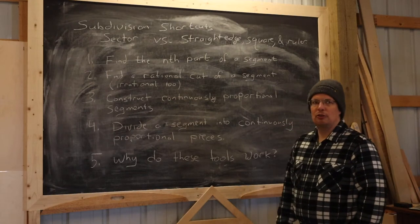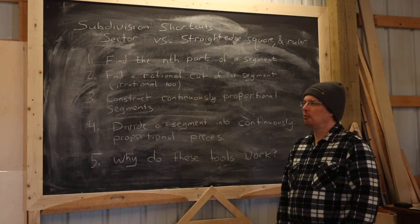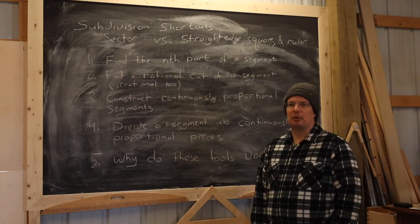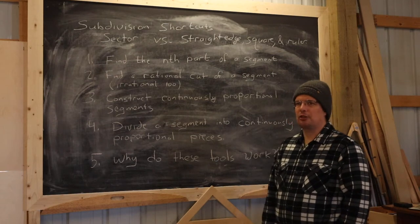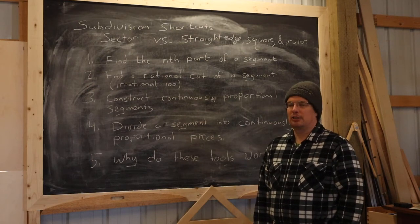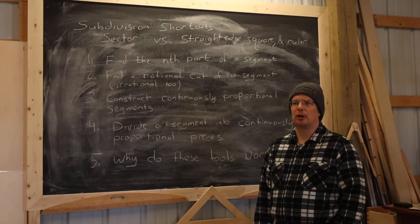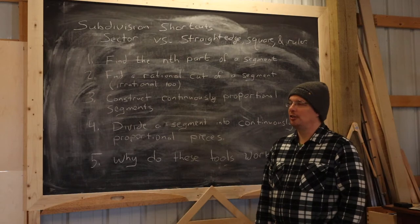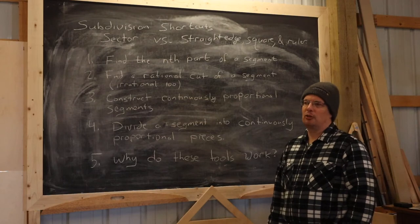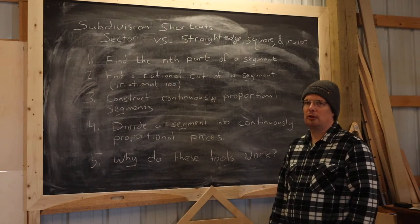The techniques we're going to apply are ones we already know how to do. We can do constructions listed on this board using nothing but a compass and a straight edge — it's just that those constructions take more time and require more stray marks on your paper. We're going to review the construction for finding the nth part of a segment — finding a module that you can step out the entire length of the segment with, a total of n times.